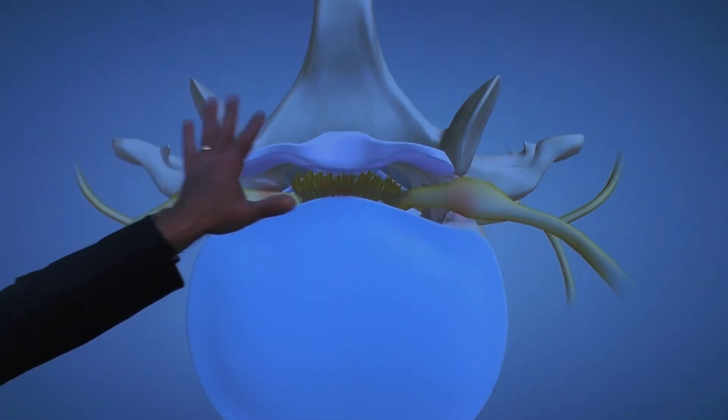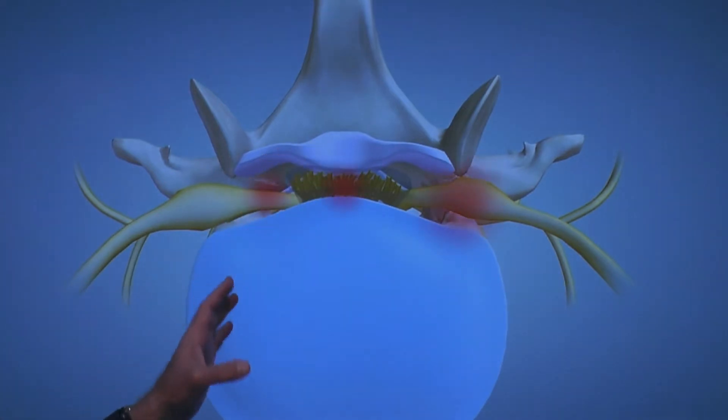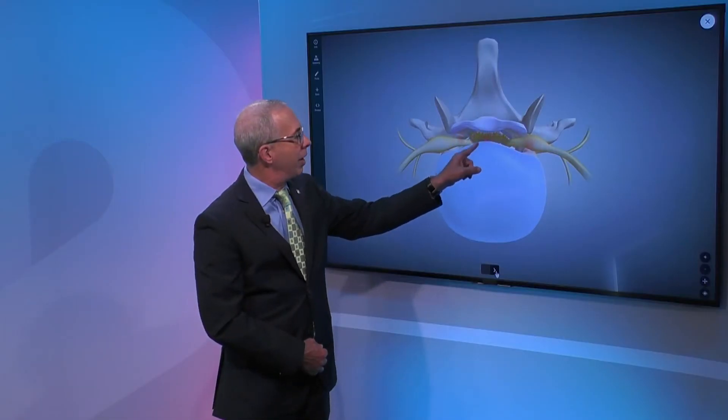These are some of the bony elements in the back, and then this is the key feature here that's lighting up in red—this is the canal. So we talked about lumbar stenosis; it's really narrowing of this canal.